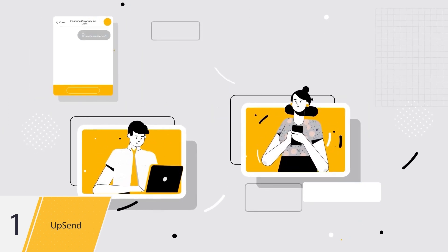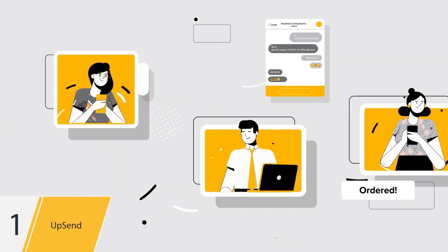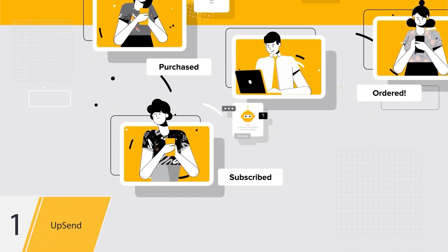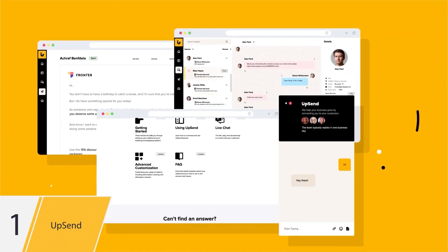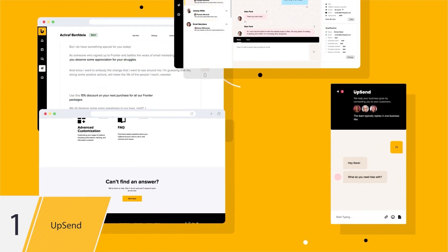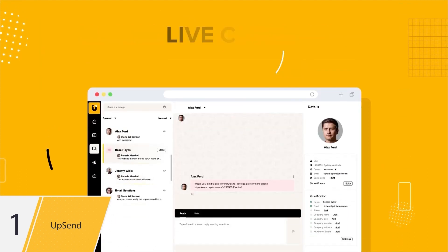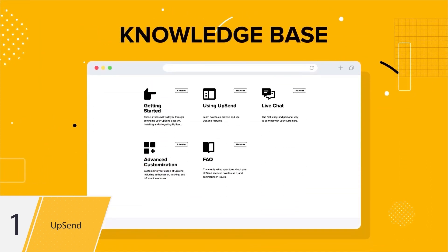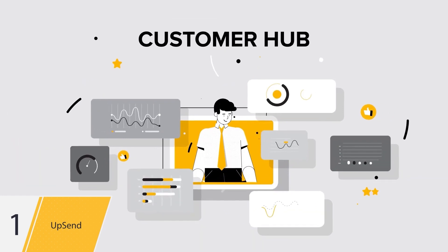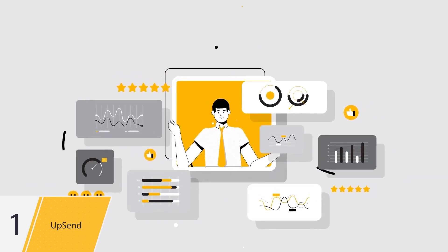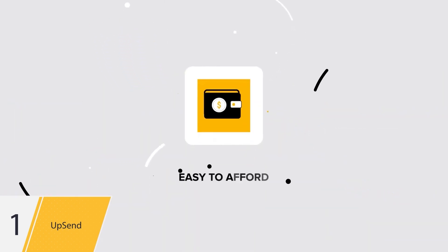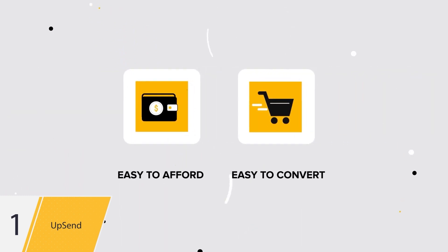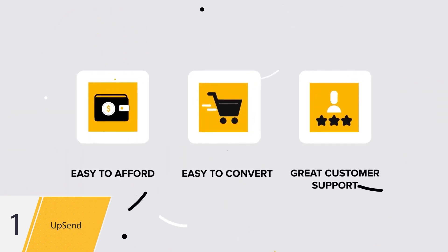Imagine the conversations you can achieve if you can engage every visitor with instant chat or messages. Upsend comes packed with a variety of super-powered features like powerful marketing automation, live chat, in-app messages, and a knowledge base with all the useful information for you to engage customers — all of these amazing tools for a crazy affordable price, making it easy to convert your sales and keep your customers satisfied.